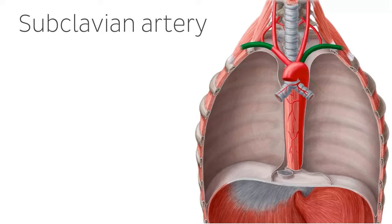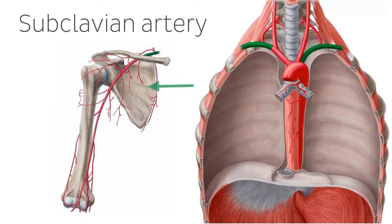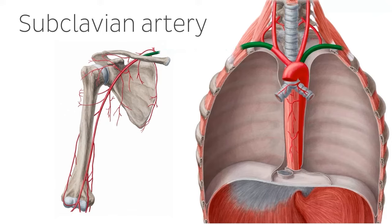Moving to the image on the left, we can see the scapula, humerus and clavicle, as well as the arteries that run along them. Running along here is the extension of our subclavian artery, highlighted in green, almost like an extension of our image on the right. You can see that when the subclavian artery passes the lateral border of the first rib, it enters the region called the axilla, and this artery is therefore known in this region as the axillary artery.